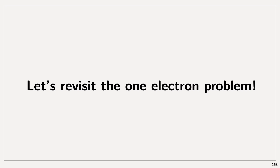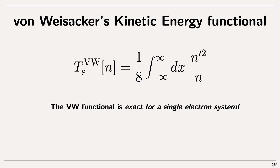On part one I want to give you some hints as to why density is enough. For that we are going to revisit the one-electron problem. I'm going to introduce a functional — a function of a function — which is a functional that has to do with the kinetic energy. It was developed by von Weizsäcker. I'm not going to demonstrate how we get to this point, but I'm going to show you that this functional for the kinetic energy is exact for the single-electron system.